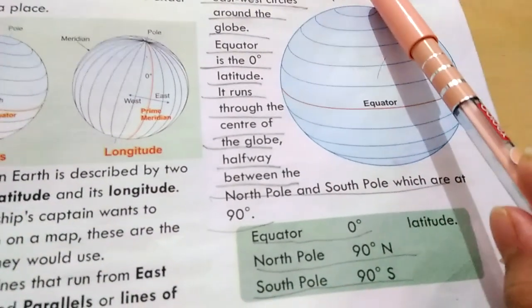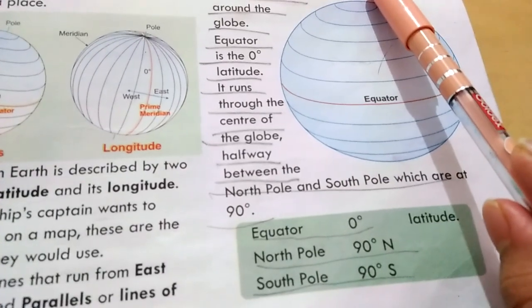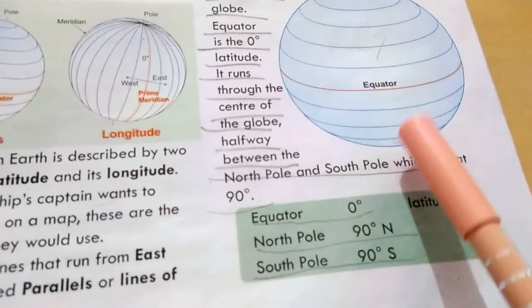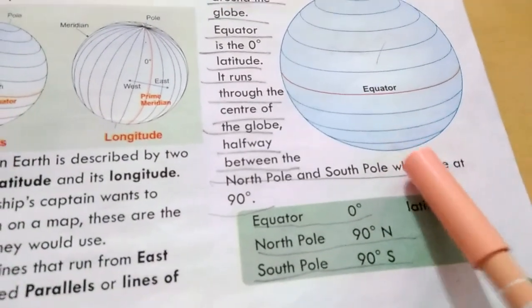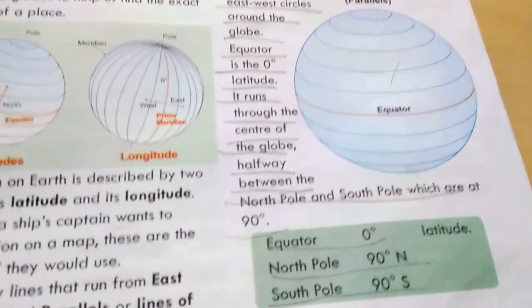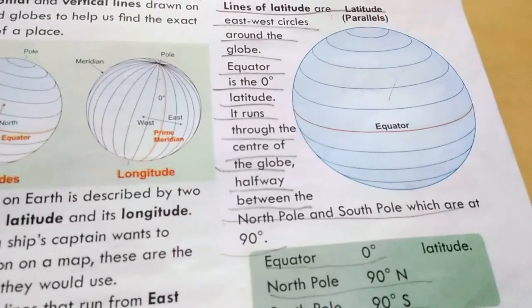The north pole is at 90 degrees north, and the south pole is at 90 degrees south.